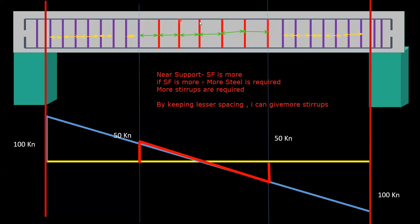But practically it is not possible. If you don't give the stirrup in the middle portion, you can see the top longitudinal straight bar — this top bar and the bottom bar — you won't be able to hang them properly. If you don't give the stirrup, it is difficult to hang. That is why in the middle portion we still try to give stirrups, but we increase the spacing.